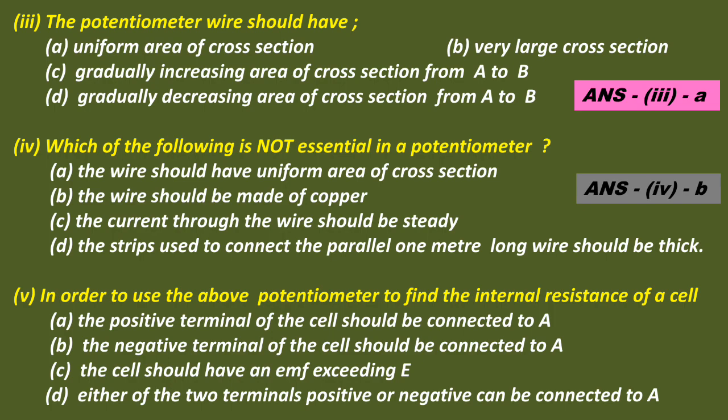Question 5: In order to use the potentiometer to find the internal resistance of a cell — Option A: the positive terminal of the cell should be connected to A, Option B: the negative terminal should be connected to A, Option C: the cell should have an EMF exceeding E, Option D: either terminal can be connected to A. The correct answer is A — the positive terminal of the cell should be connected to A.